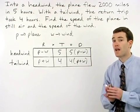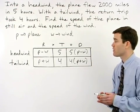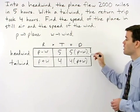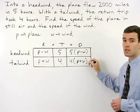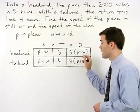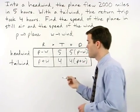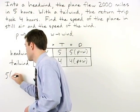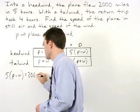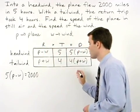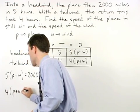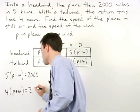Since we know the actual distance that the plane flies in each direction is 2,000 miles, we can set each of our two distances equal to 2,000. So we have 5(p - w) = 2,000 and 4(p + w) = 2,000.